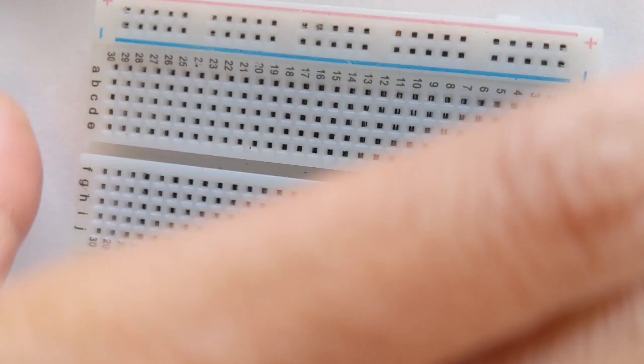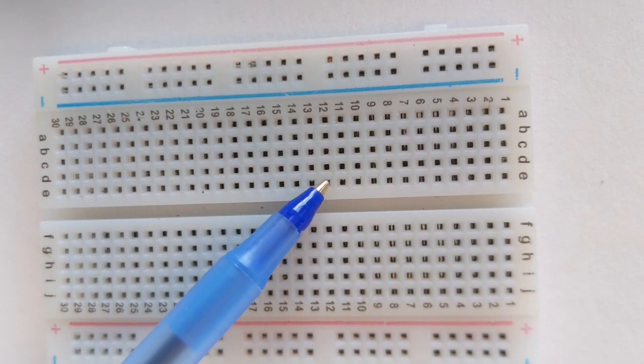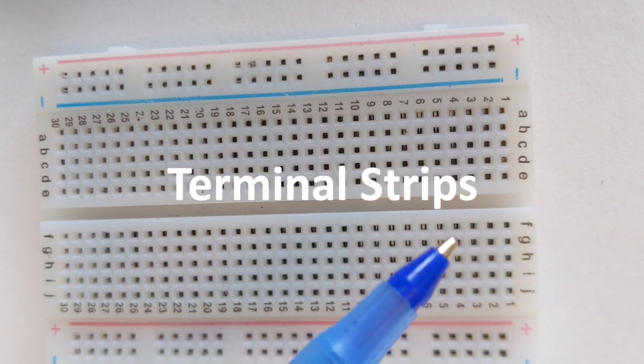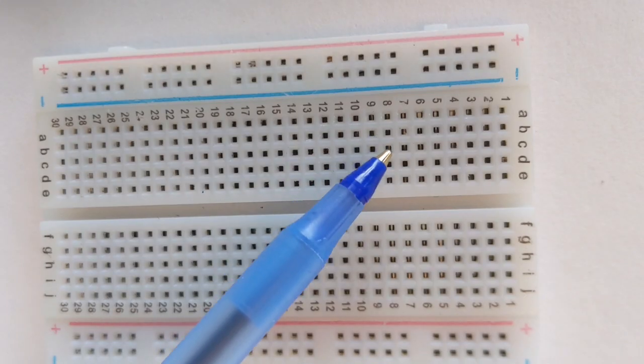Each row of five holes on our breadboard are connected by one metal plate and these are called terminal strips. Any components that are in the same row or terminal strip are essentially connected to each other because of that metal plate underneath.